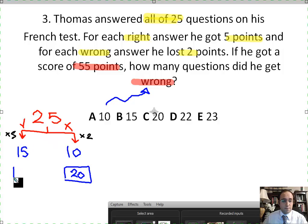Fifteen times five is 75. So he got 75 points for answering 15 questions correctly. And he lost 20 points for answering 10 questions wrong. 75 minus 20 equals 55.